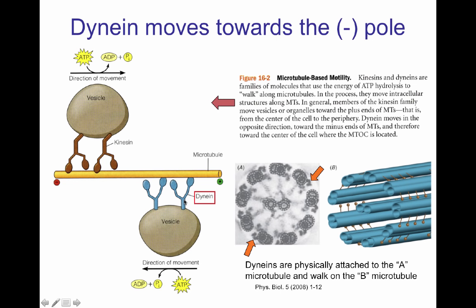Dyneins are small ATP-based motors that move along the microtubules towards the negative end. In the axoneme structure, at each doublet you have a set of dynein motors bound all along the A portion of the microtubule, and they're going to use the neighboring B microtubule as a railroad track.